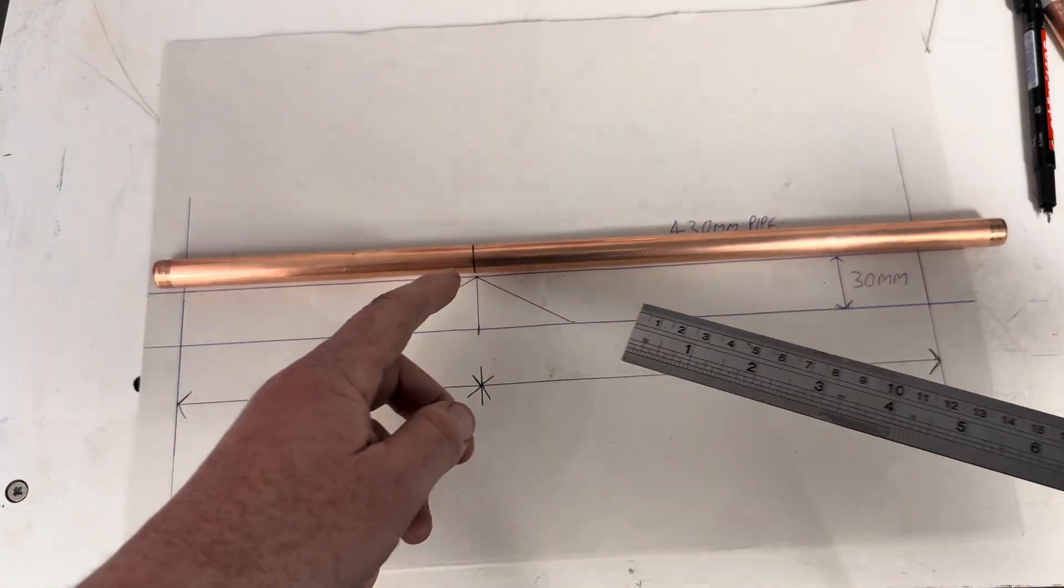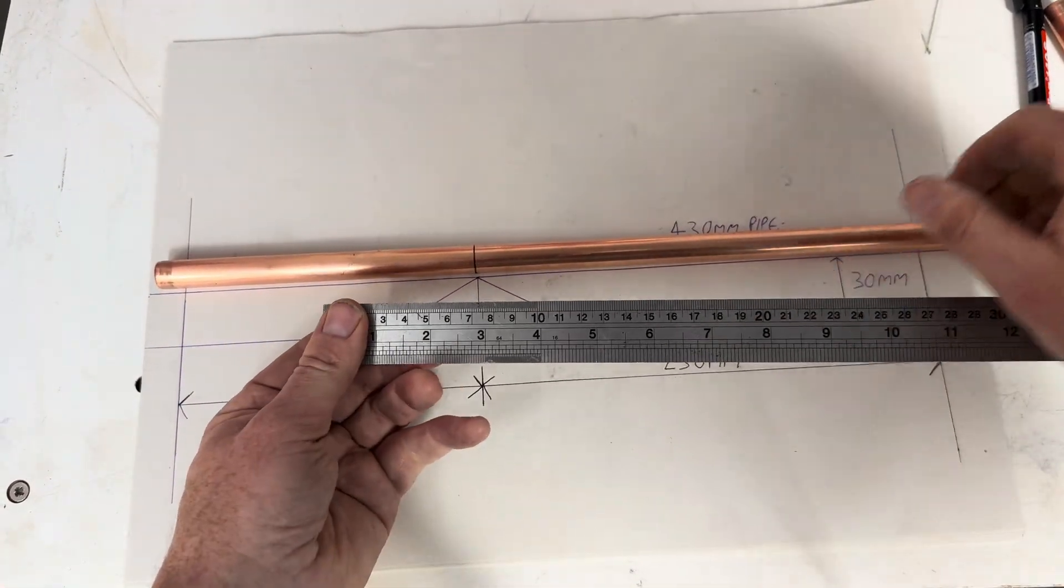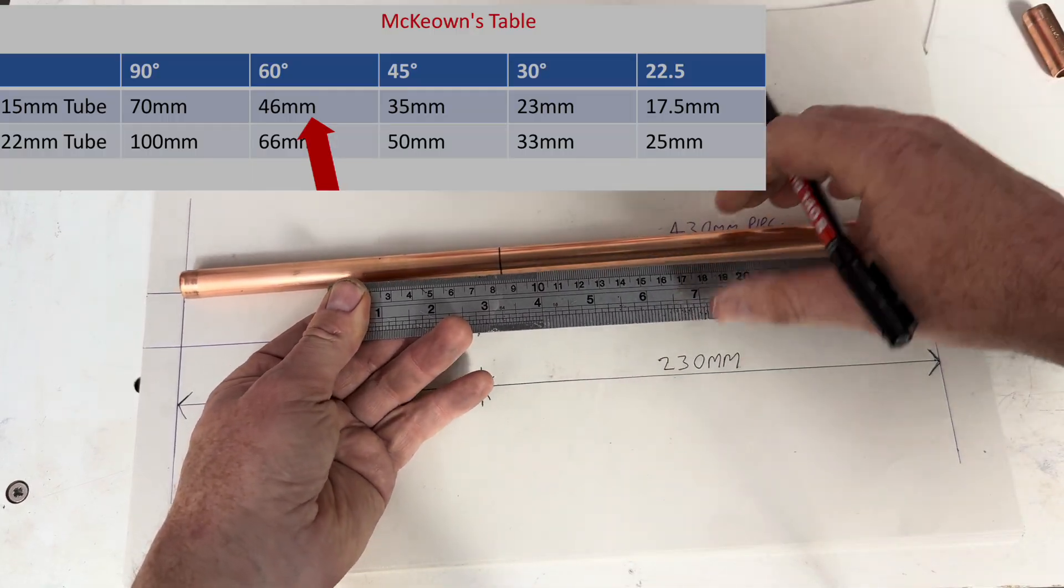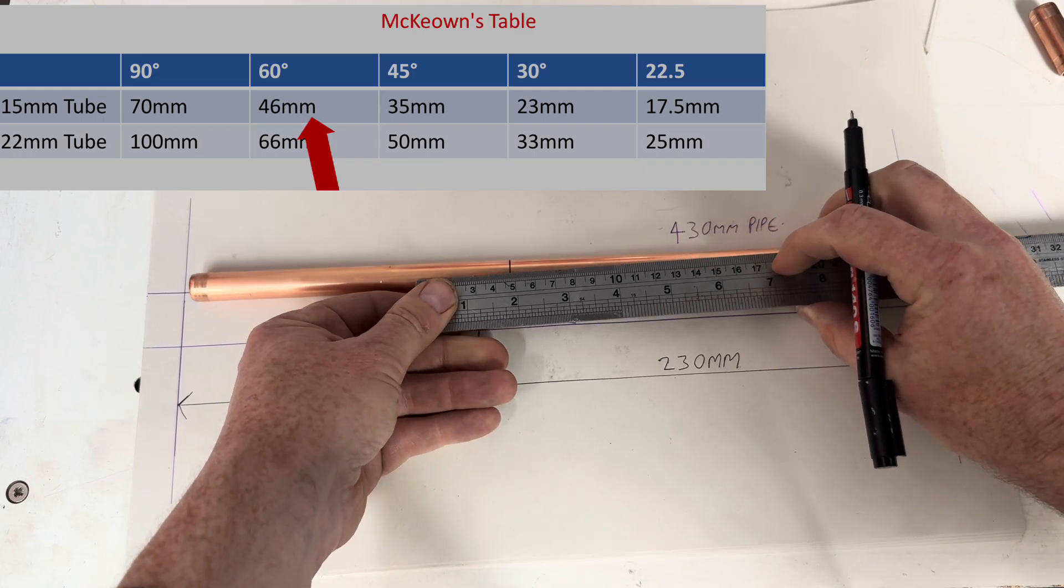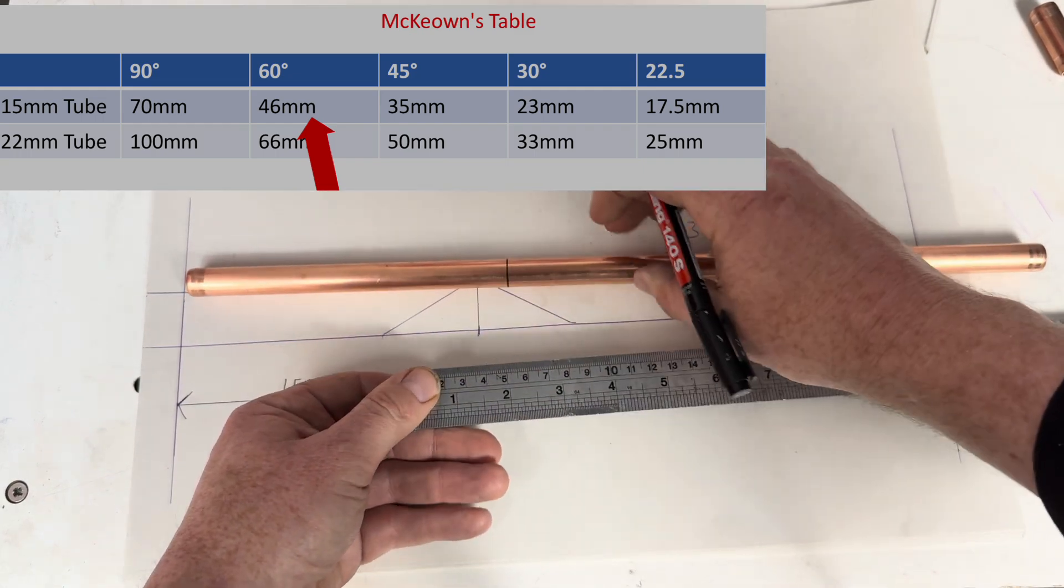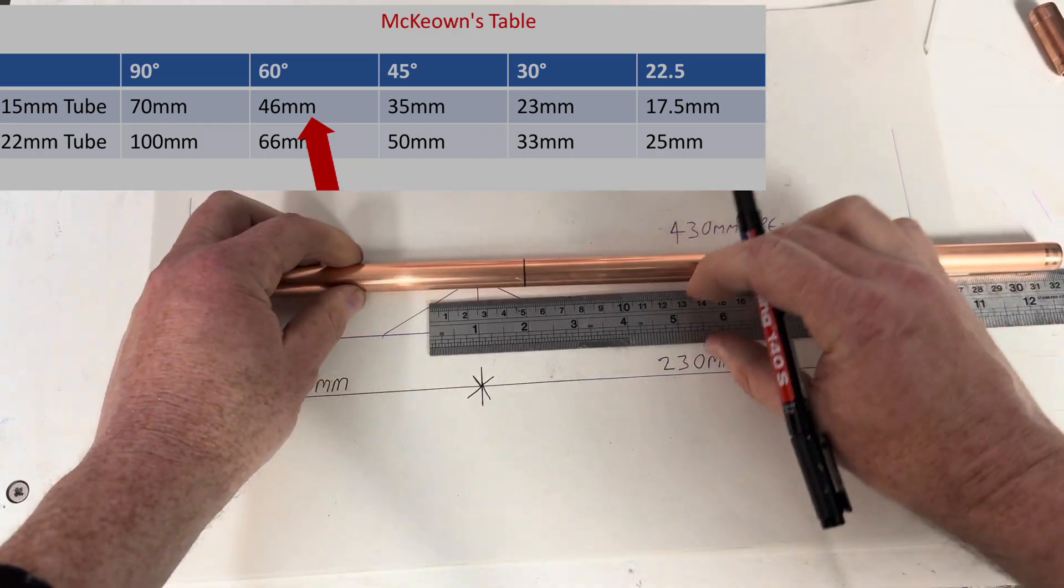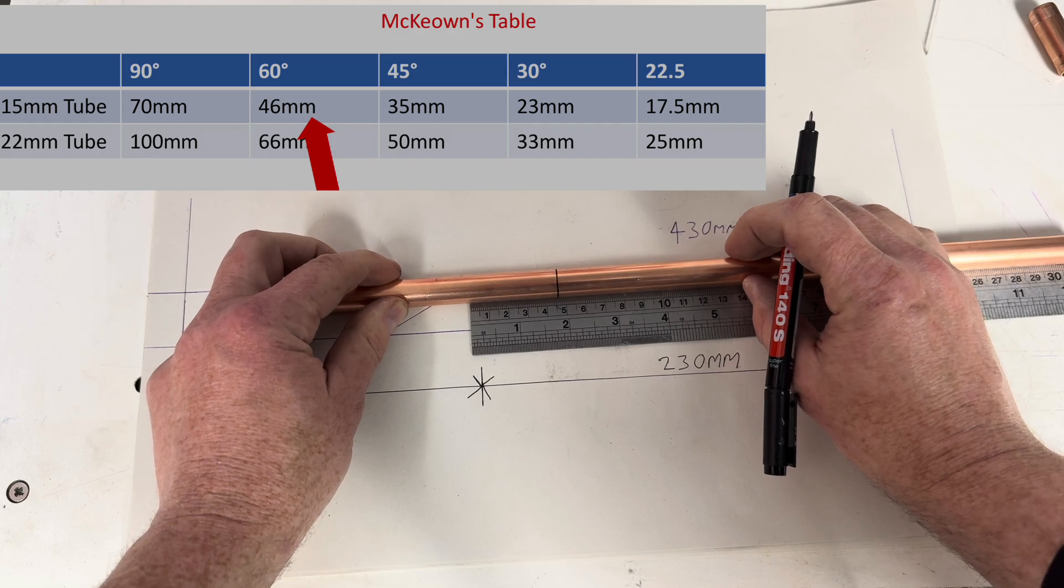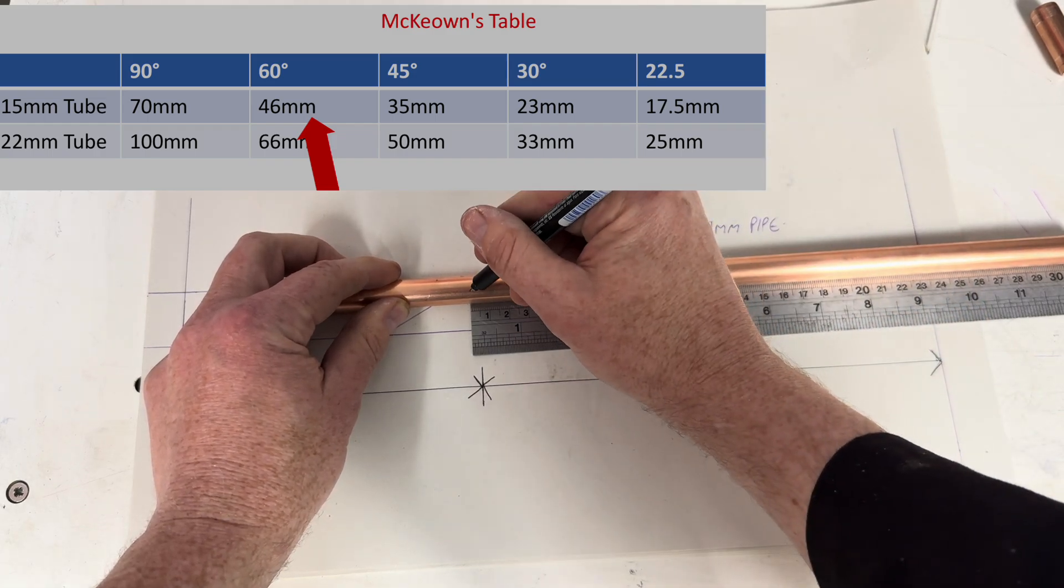To find the centre of this bend on the pipe benders, we're going to use the measure back method, the McEwen measure back method. So because we've got 15mm pipe, we're going to bend it 60 degrees. We need to measure back, looking at the chart, 46mm which is here.